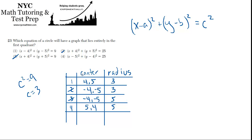Now we have to choose between 1 and 4. Both have centers in the first quadrant, but choice 1 has a radius of 3, so it will never extend into any other quadrant — it's the best choice. Choice 4 is located at (5, 4) and its radius is 5, so let's draw what happens in that case.